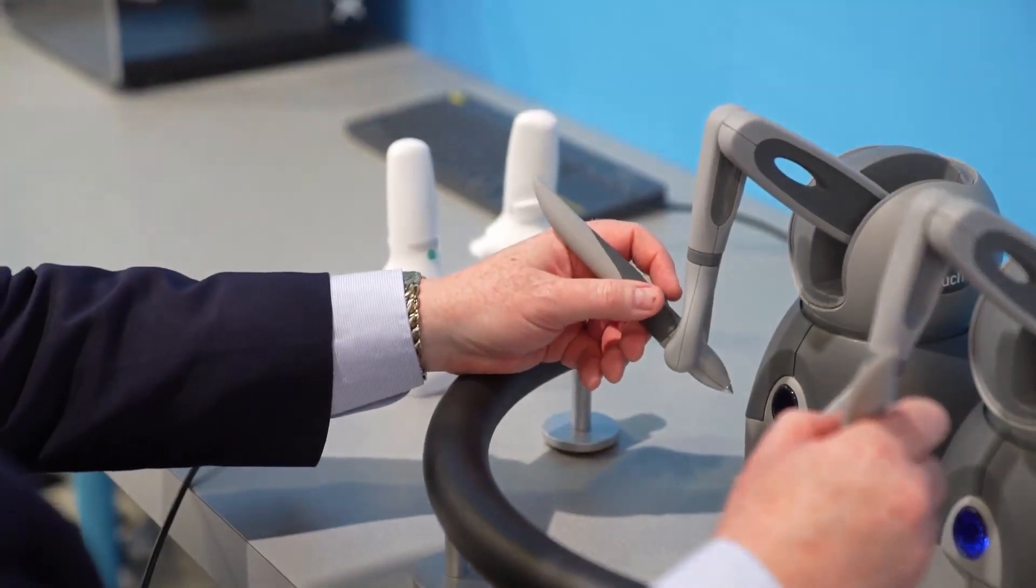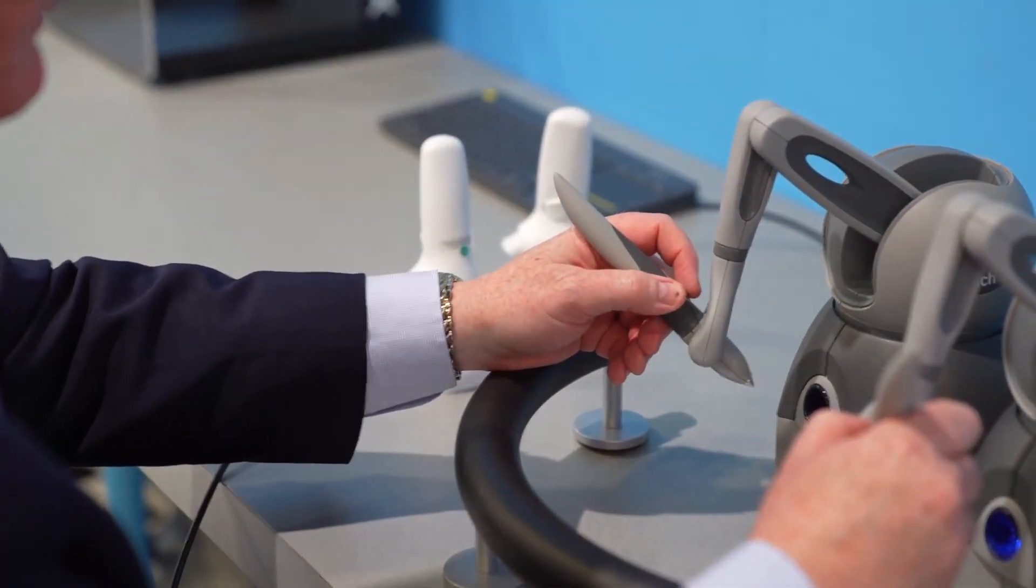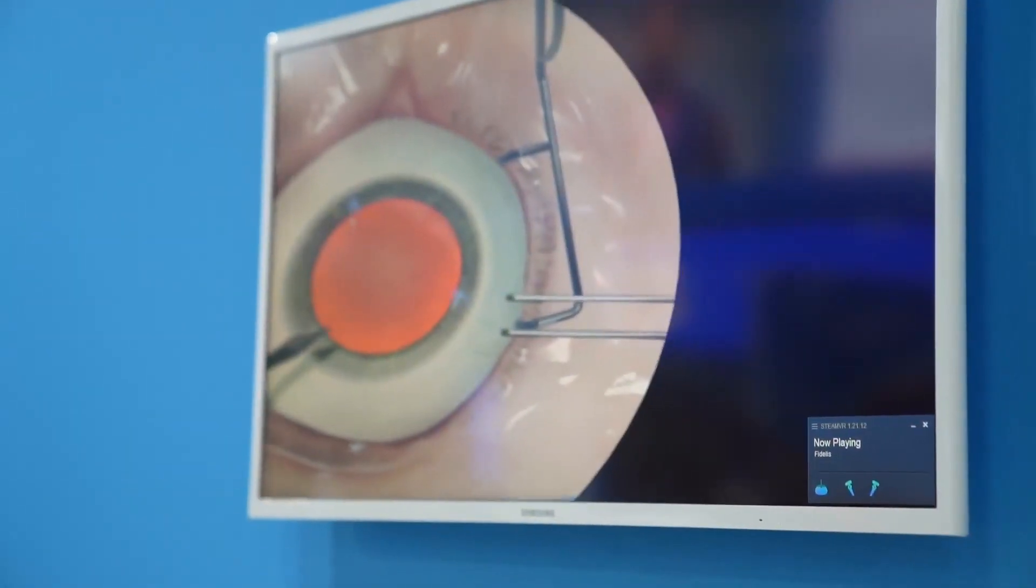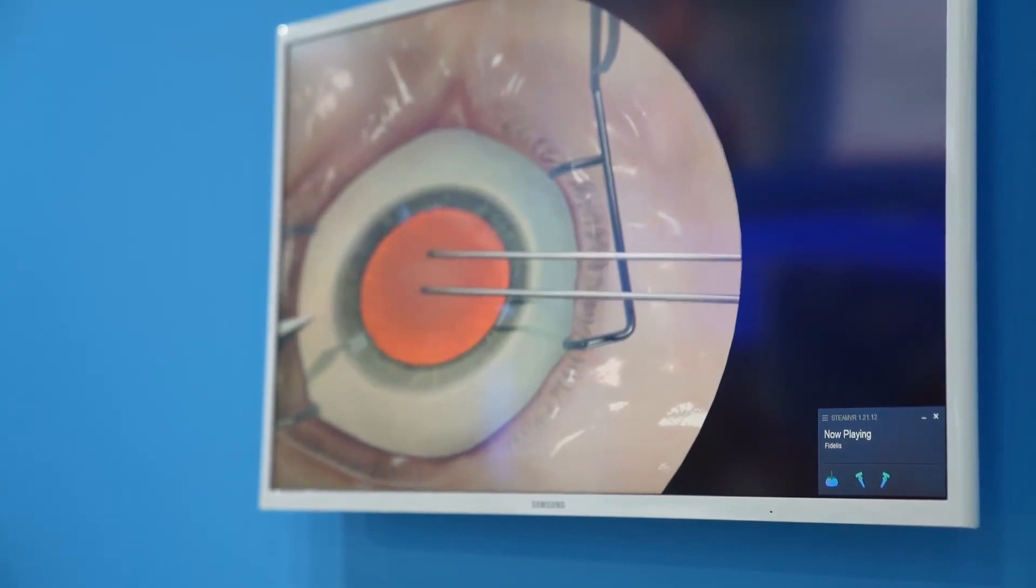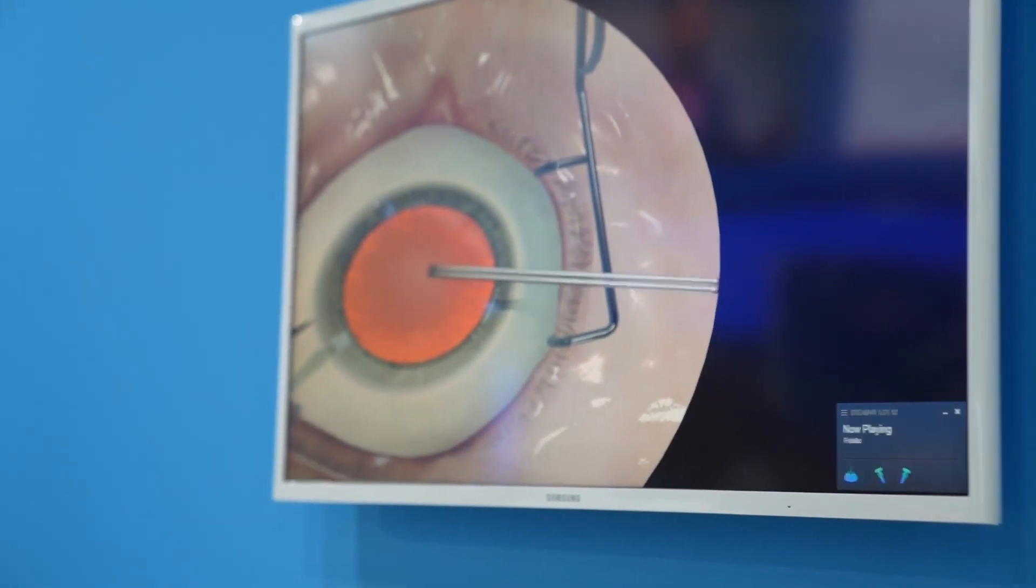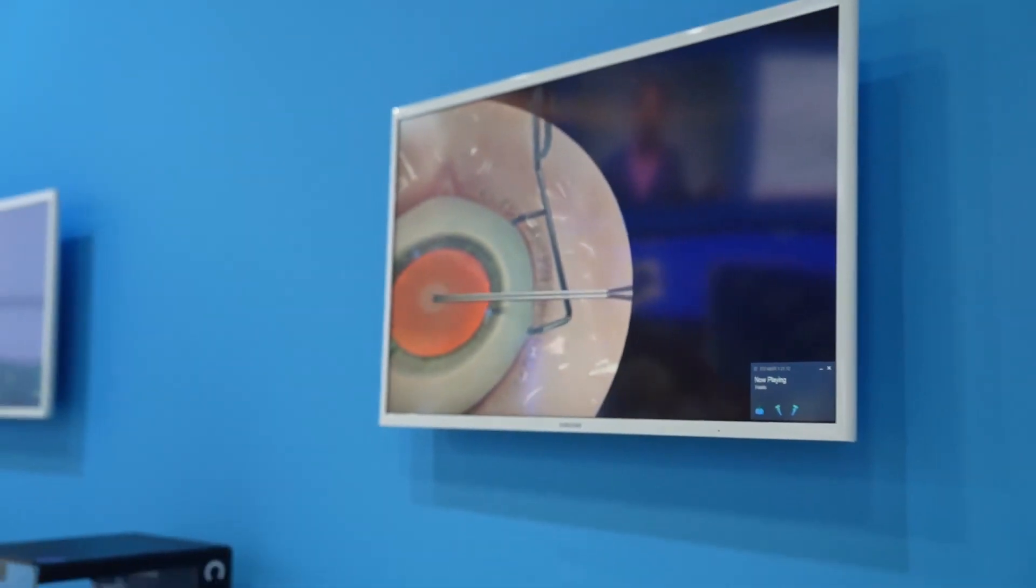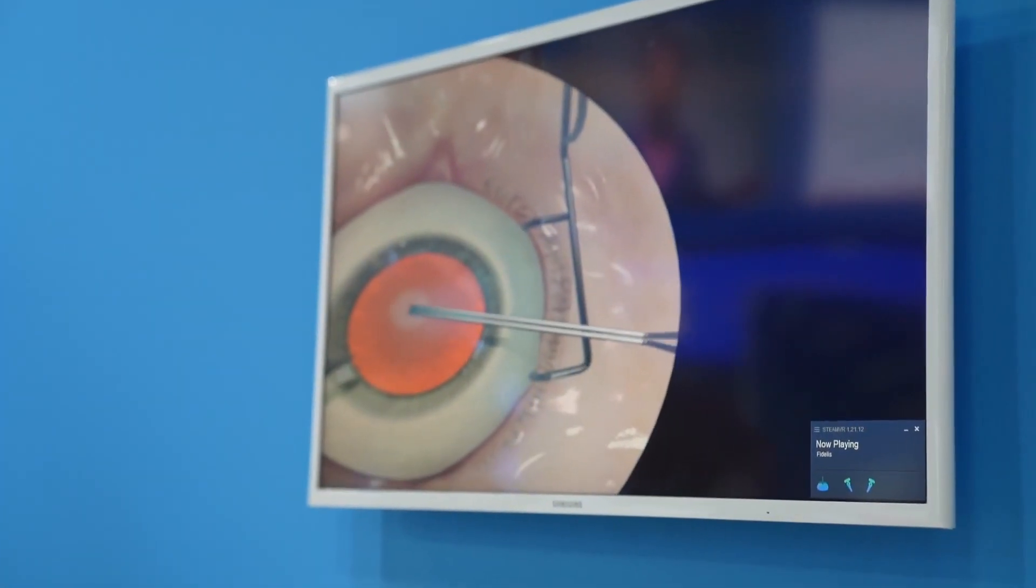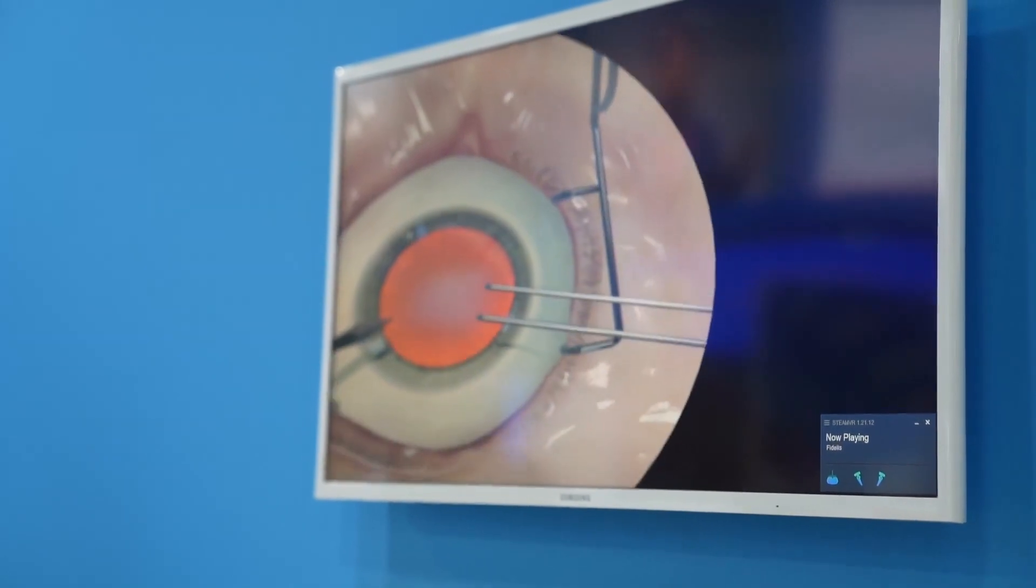What's interesting about Fidelis is that we have haptic feedback, meaning that I can feel resistance in my hands as I'm manipulating the instruments and going through the different steps of the procedure. You can see here that I'm applying pressure to the top of the cornea. I can feel that resistance in my hands as I'm applying that force.